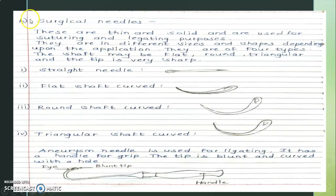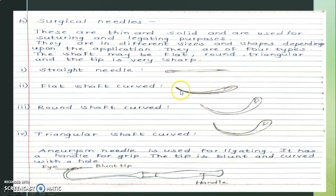Next are surgical needles. These are thin and solid, and are used for suturing and ligating purposes. They are available in different sizes and shapes depending upon the application. There are four types — the shaft may be flat, round, or triangular, and the tip is very sharp. This is the diagram: this is the tip, which is the sharp and narrow end; this is the other side, which is the shaft.